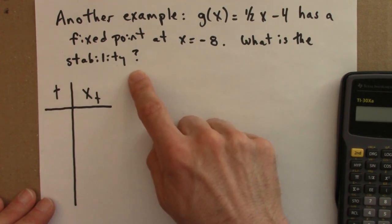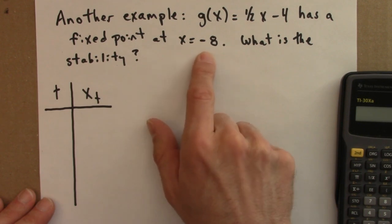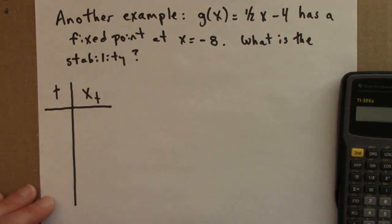So a fixed point is stable if nearby points get pulled towards it, and it's unstable if points get pushed away. So let's try doing an experiment with an initial condition near but not exactly at this fixed point and see what happens.